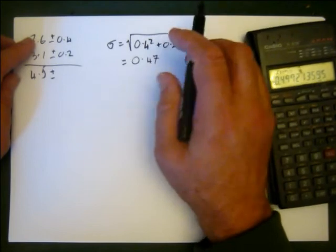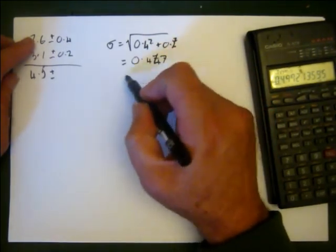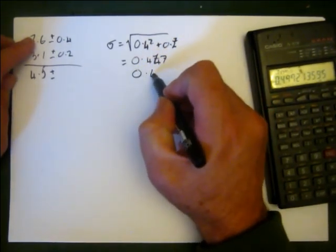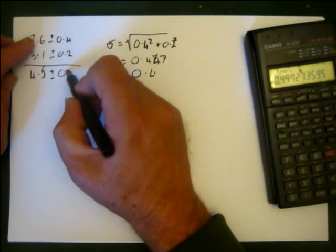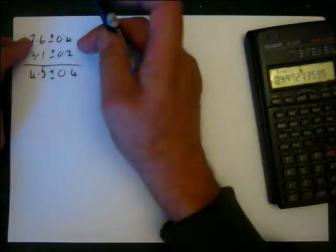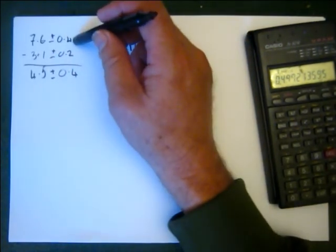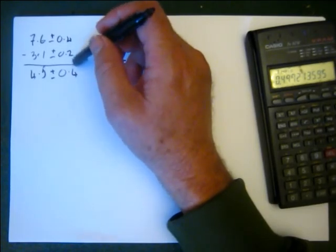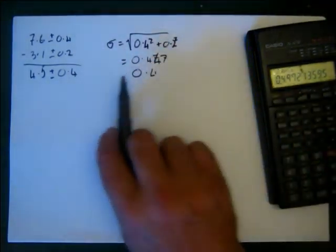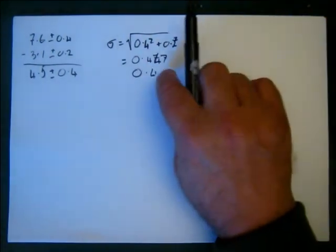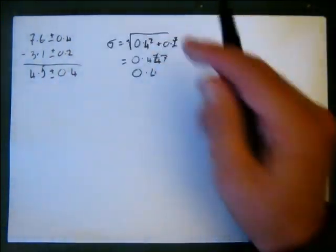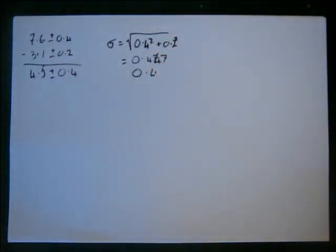Of course, 0.447, which rounds to 0.4. So 0.4. So what that says is this error or uncertainty here is so large it actually dominates over that one. But you do it exactly the same way as adding. You square the uncertainties, add them together, take the square root, and then round to one significant figure.